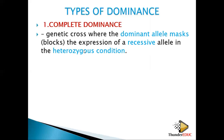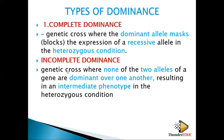In incomplete dominance, the dominance is there but it is incomplete. It means one allele brings 50% and the other also brings 50%. It is a genetic cross where neither of the alleles is dominant over the other — they have equal powers.